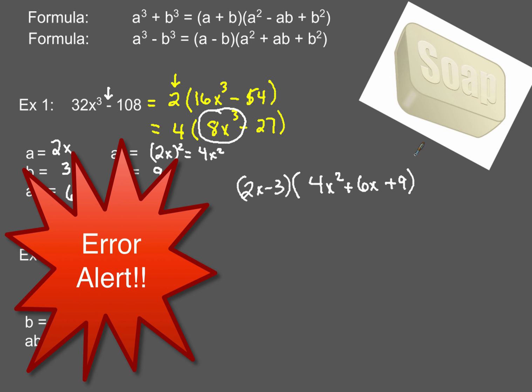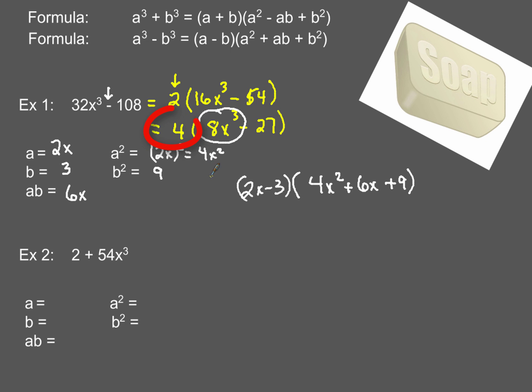Now, this is the common mistake most people will make right here. Remember in the beginning, we ended up factoring out a 4? Make sure you write that 4 in front of the product that you just wrote down. So, your final answer, of course, is going to be 4 times the quantity 2x minus 3 times the quantity 4x squared plus 6x plus 9. All right, so take your time when you do that. Don't forget, if you do take out a GCF, you've got to put that in the front.